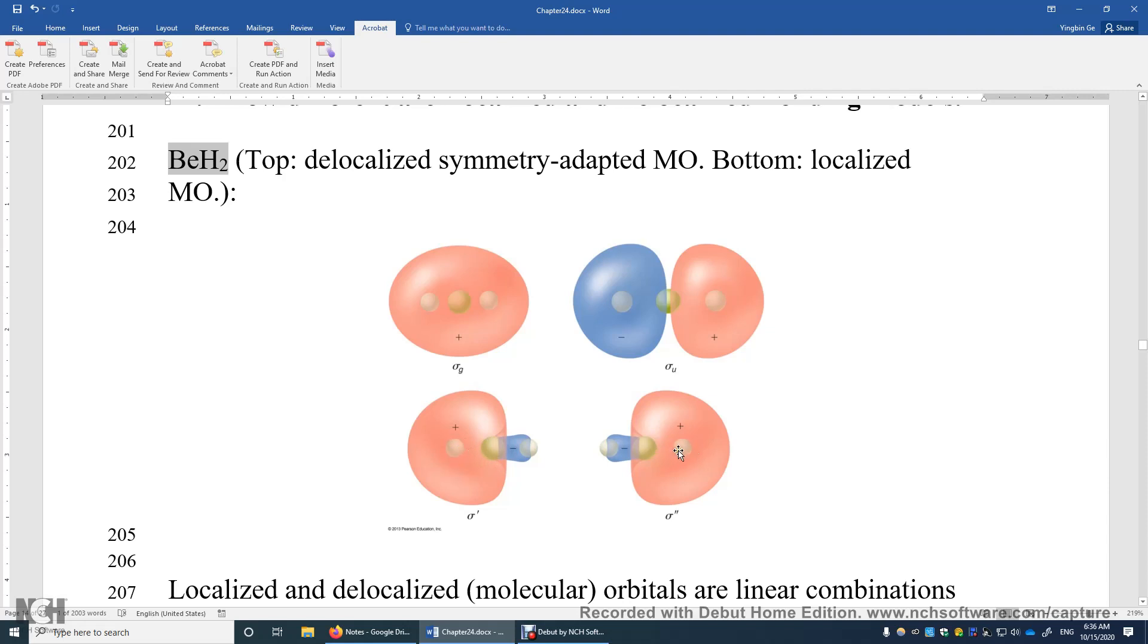Similarly, this is another bond, another sigma bond between this Beryllium and the hydrogen on the right.